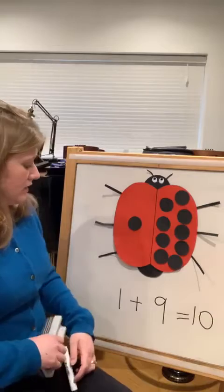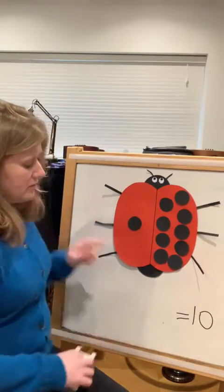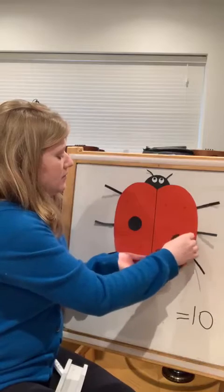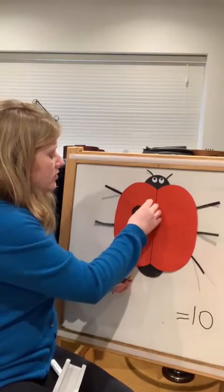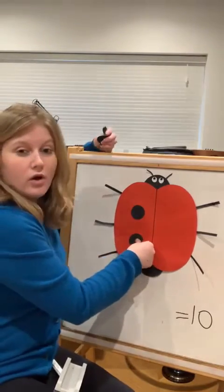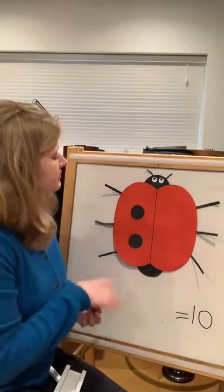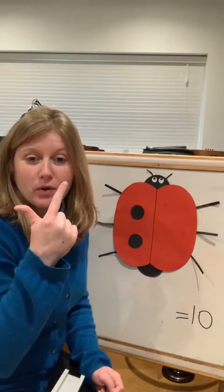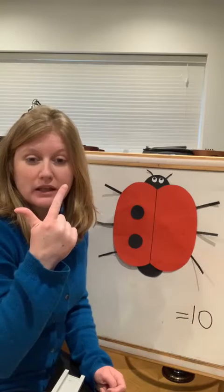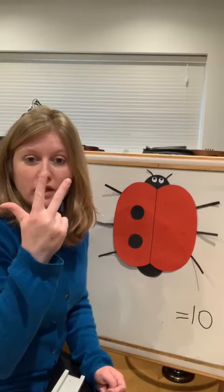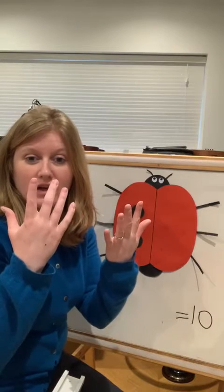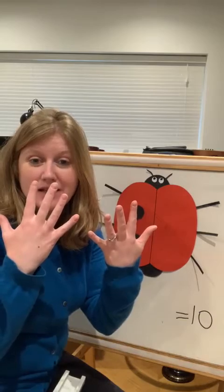Right, let's do another one. I'm going to rub out part of my number sentence but leave the equals ten. Let's take the spots off. This time I'm going to put two spots on this side: one two. I've already got two — how many more spots do I need to make ten altogether? One two three four five six seven eight nine ten.